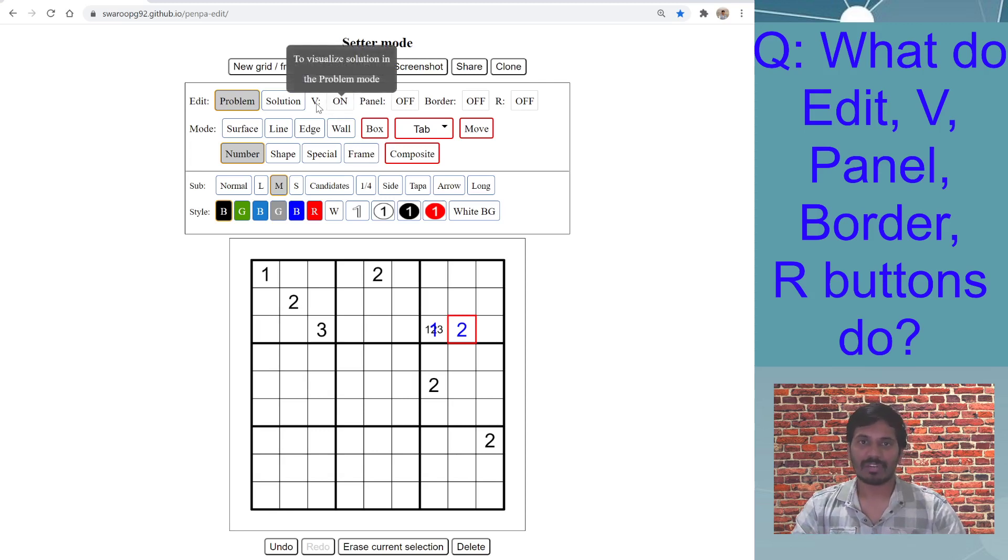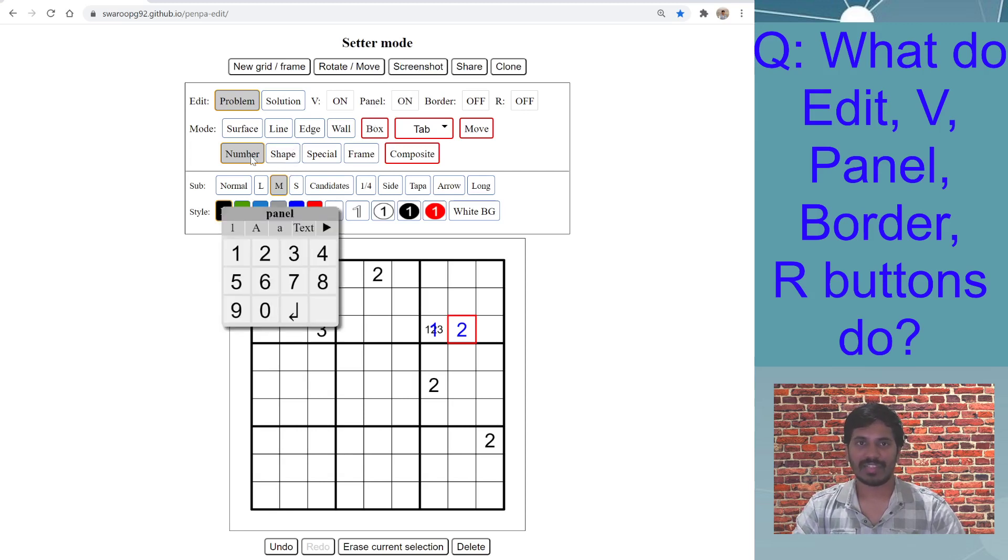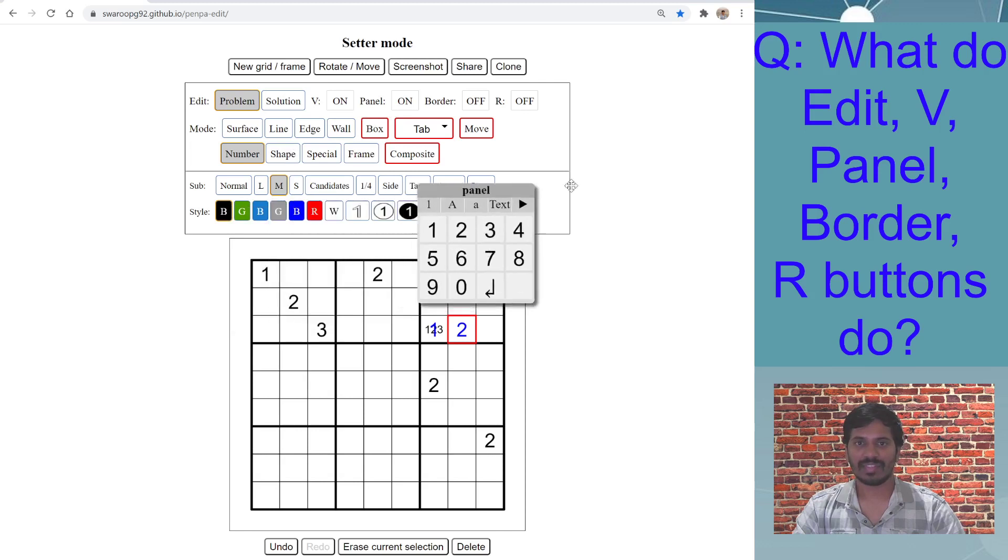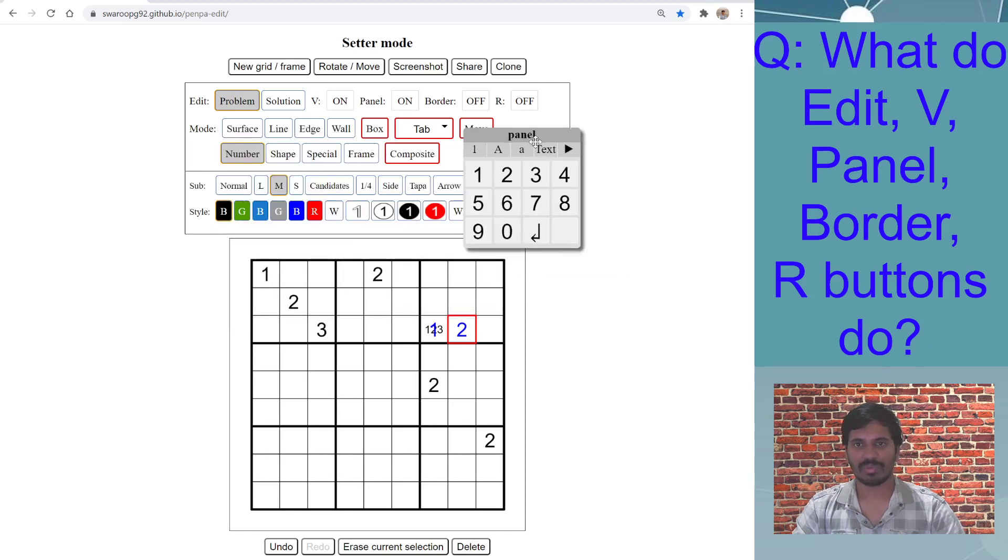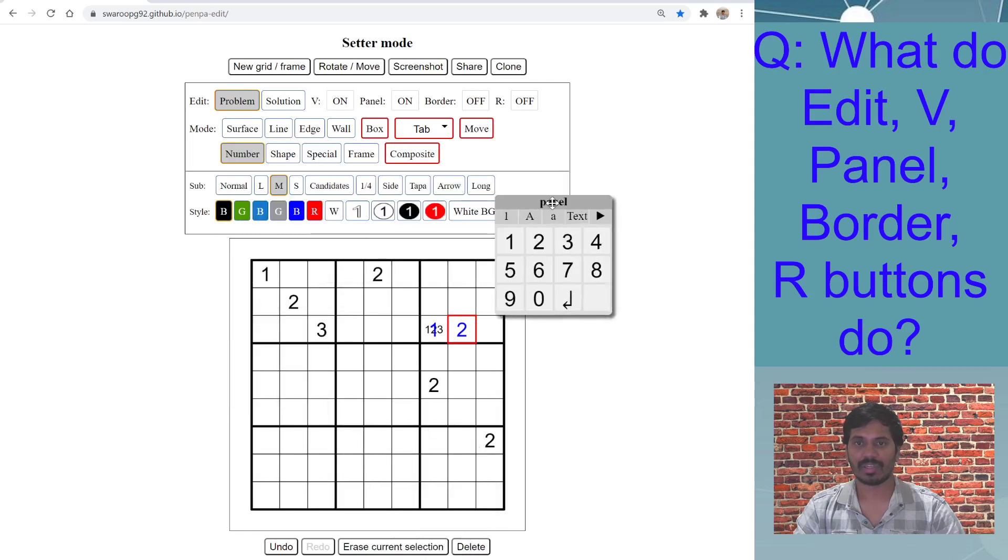I hope now this V button is clear. Let's move on to the Panel button. This Panel button is specifically useful for two modes, which is number and shape mode. If you click Panel on while in the number mode, you can see that here.